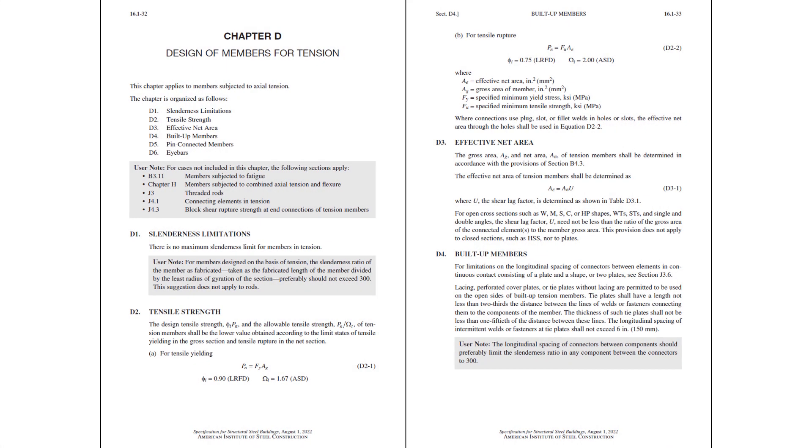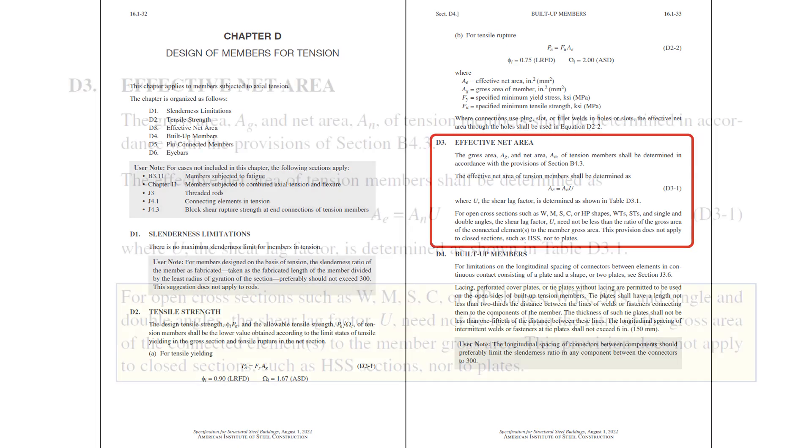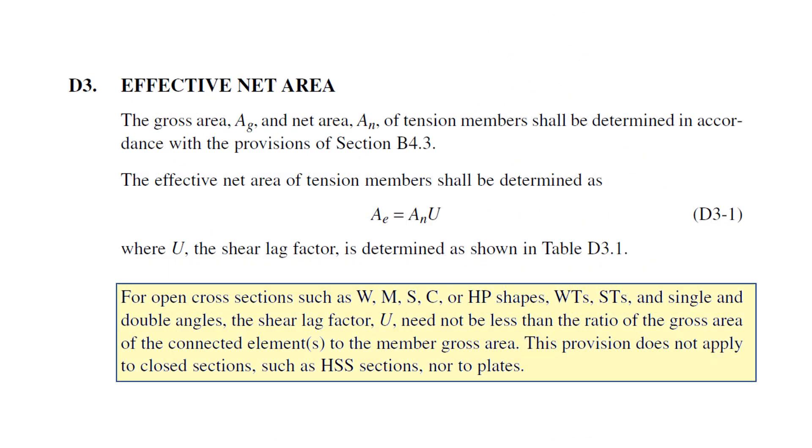However, there is a provision in AISC specification section D3 on the determination of the effective net area that may come into play in this particular case. Looking at that provision more closely, it reads: for open cross sections such as W, M, S, C, or HP shapes,